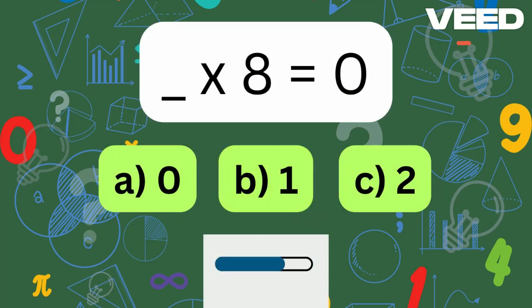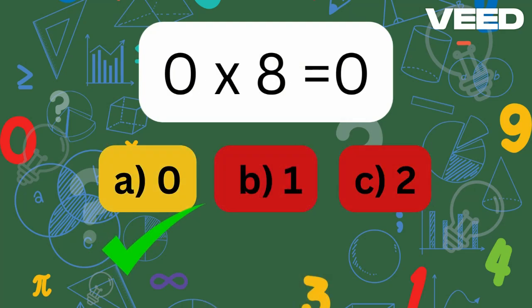What times 8 is equal to 0? 0 times 8 is equal to 0.